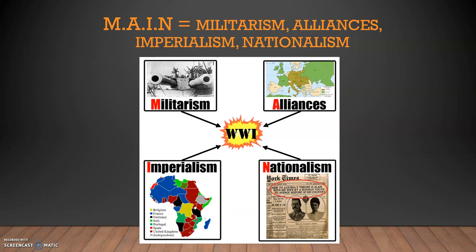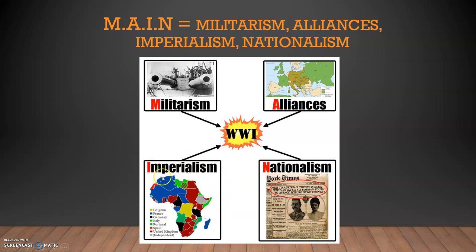Our acronym is MAIN. It stands for Militarism, Alliances, Imperialism, and Nationalism. We'll talk about each of these individually. We have big militaries building up, a lot of different alliances, imperialism where countries are trying to fight over different parts of the world like Africa, and then nationalism — which is kind of like over-the-top patriotism is my best way of explaining it in under 10 seconds.